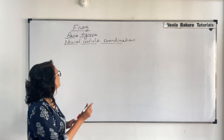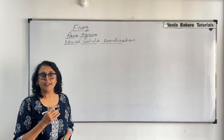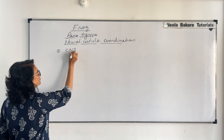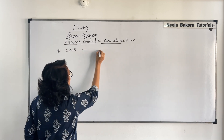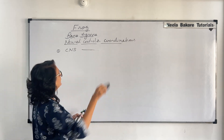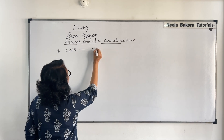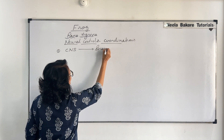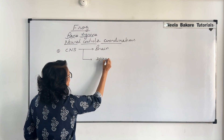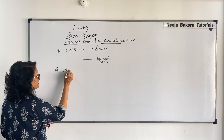Neural control and coordination — when we talk about the complete nervous system — can be divided into the CNS, that is the central nervous system, which comprises the brain and the spinal cord. So it has two parts: brain and spinal cord. Then comes the peripheral nervous system.